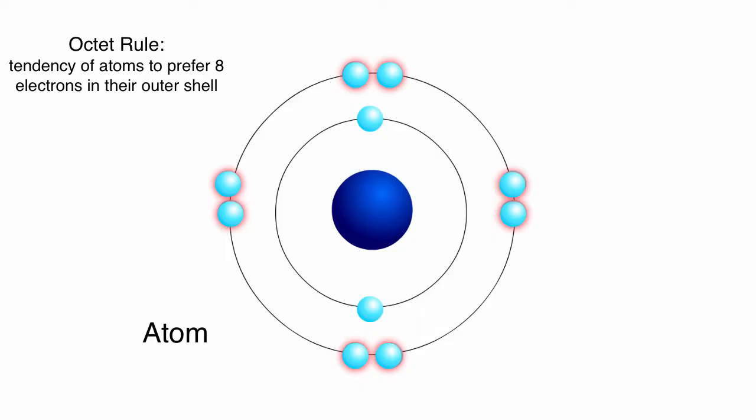When atoms combine to form compounds, they can give up, accept, or share electrons in order to assemble an octet of electrons in their outer shells.